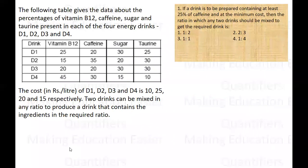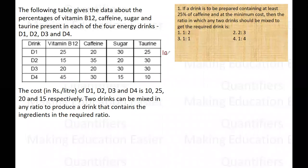Let us write down the cost of each drink. D1 has a cost of 10 rupees per litre, D2 has 25 rupees per litre, D3 has 20 rupees per litre, and D4 has 15 rupees per litre.